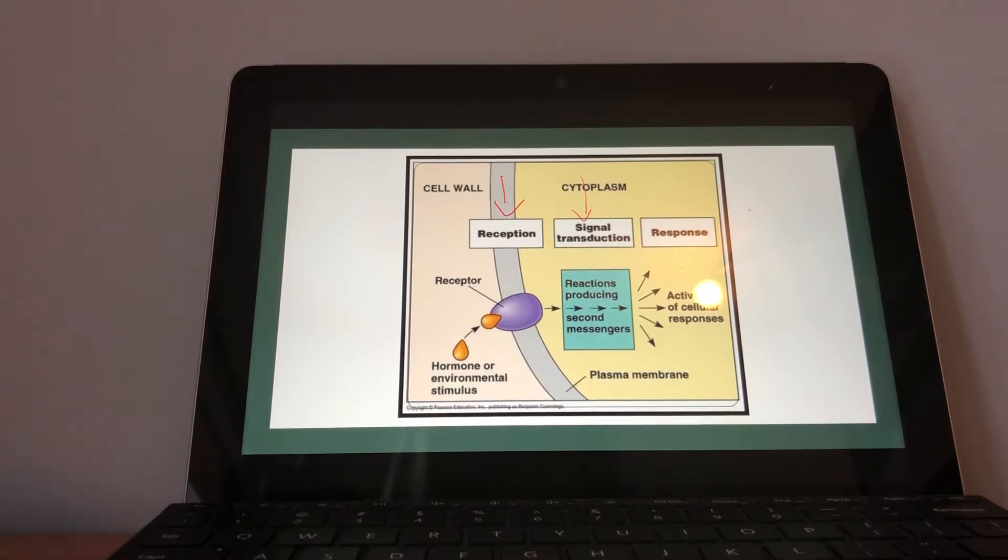What we classify as signal transduction is when the cell is going to then respond somehow to that signal, that reception. It's very complicated the way these cells work. We are going to give some examples momentarily, but basically it's a matter of sending the message. There are usually a series of reactions that are going to occur during a single transduction. It doesn't just happen automatically. There's going to be a message sent within the cell to eventually elicit some sort of response.